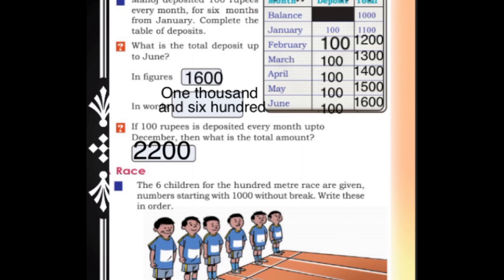In figures and in words: the total deposit up to June is 1,600. In words, we call it one thousand six hundred. In figures, 1,600.